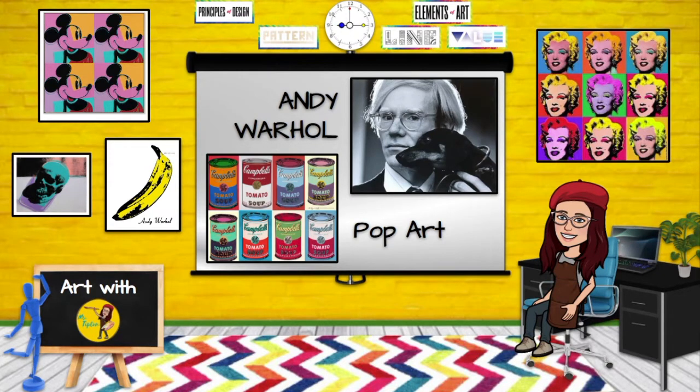Andy went to Carnegie Mellon University to study art. After graduating he moved to New York in 1959 to make his name as an artist and was quite successful as a commercial artist. He even won awards for his work and was known for his unique style but he wanted to do more with his art.